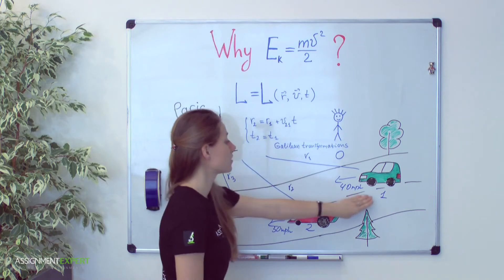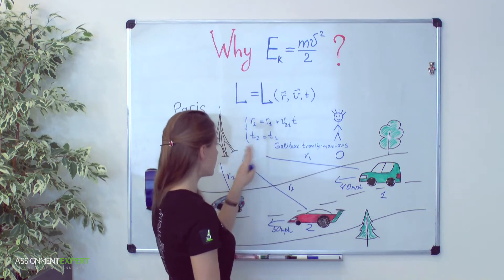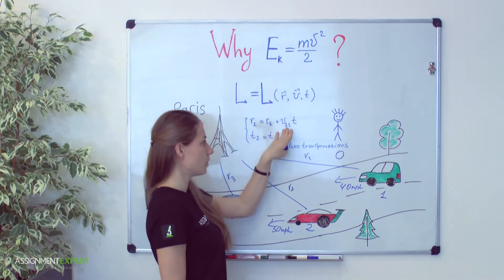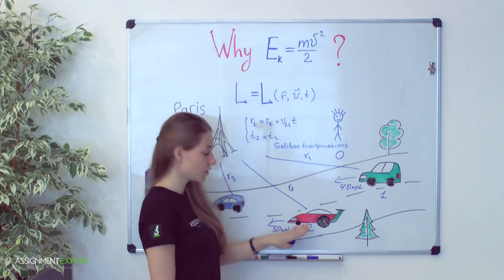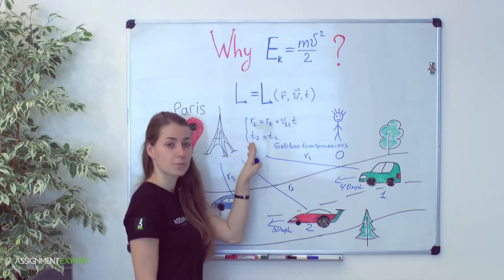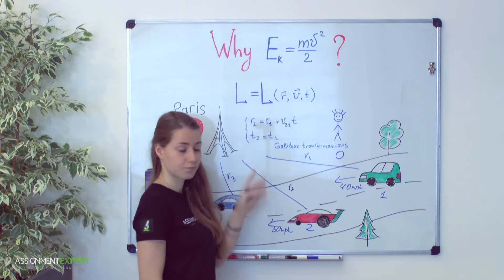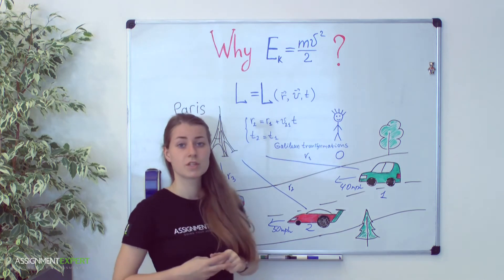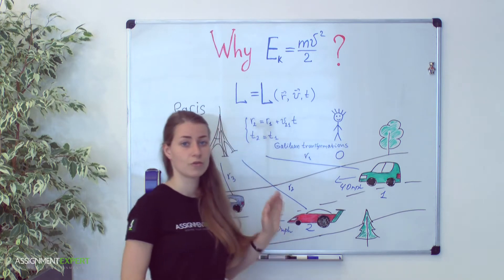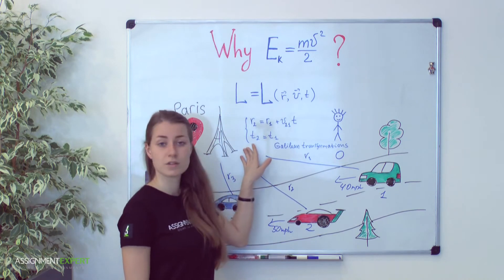R1 is a distance from the green car to Paris and R2 is a distance from the red car to Paris. Velocity v21 is relative velocity of the red car with regard to a green. Please notice that time in this approach remains unchanged. To sum up, the principle of Galilean invariance may be reformulated as invariance of physical laws under Galilean transformations.